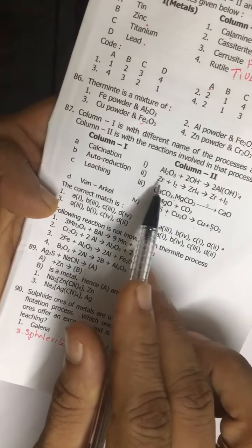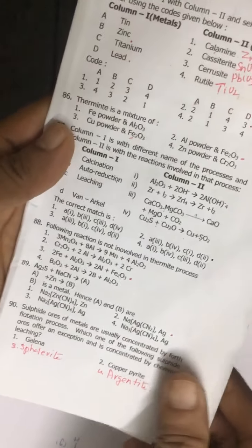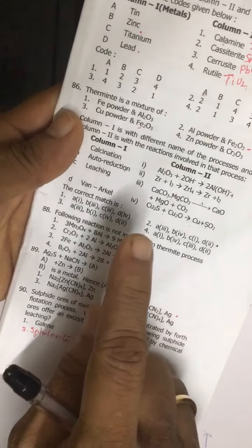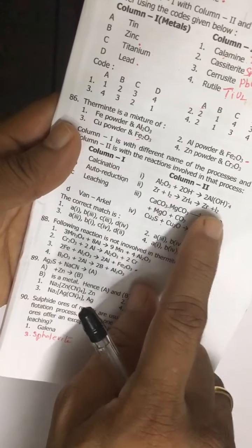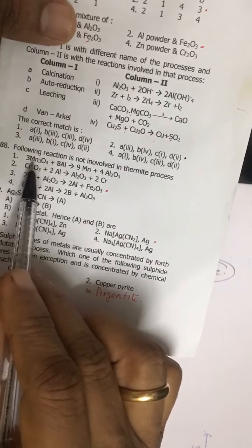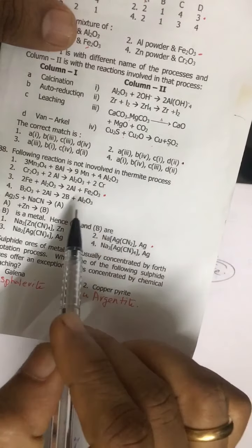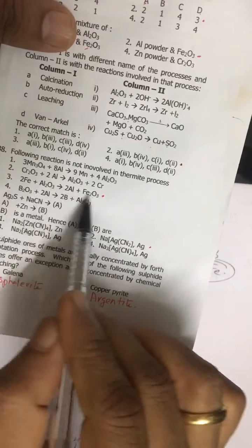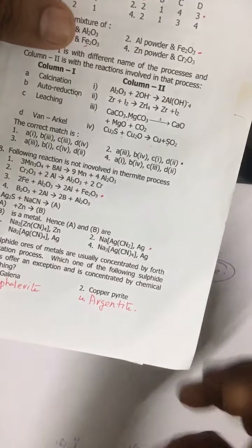And one Mond process is using iodine, means volatile metal iodide, and then on heating we get metal. Question number 88: not involved in thermite process - this is, this reaction does not involve, it is the opposite reaction is involved in thermite, we are just seeing.